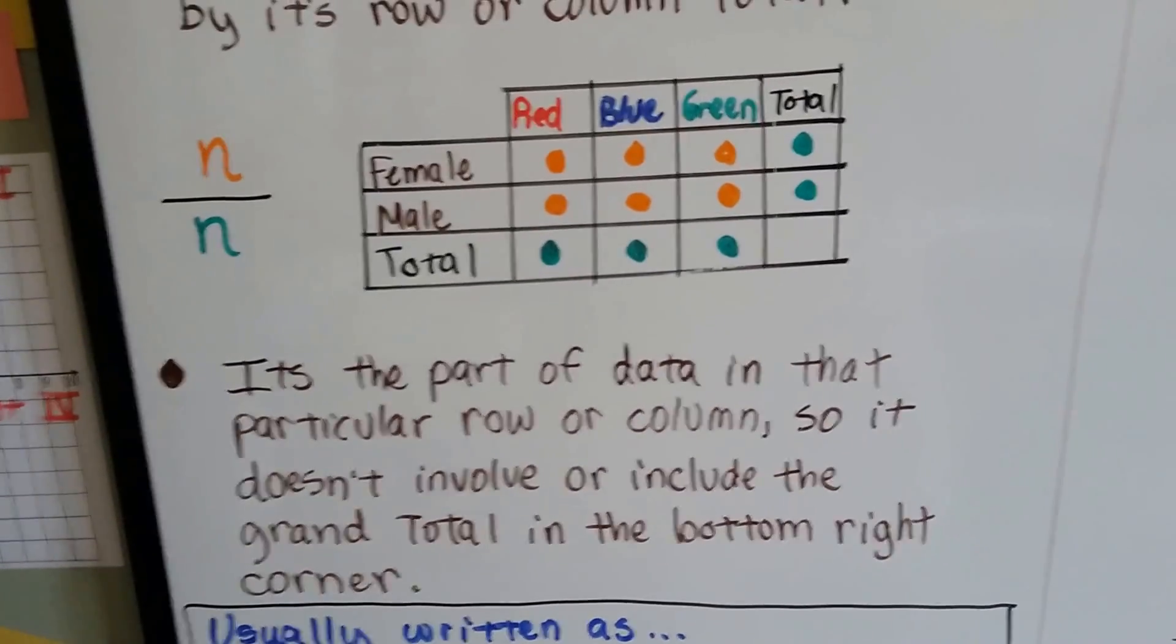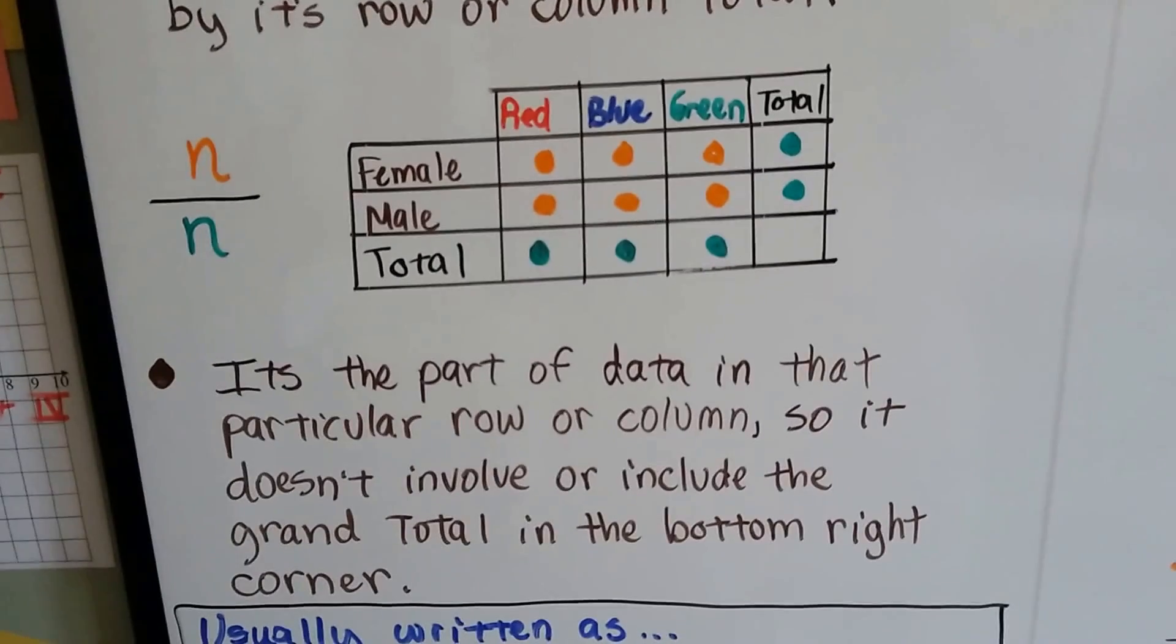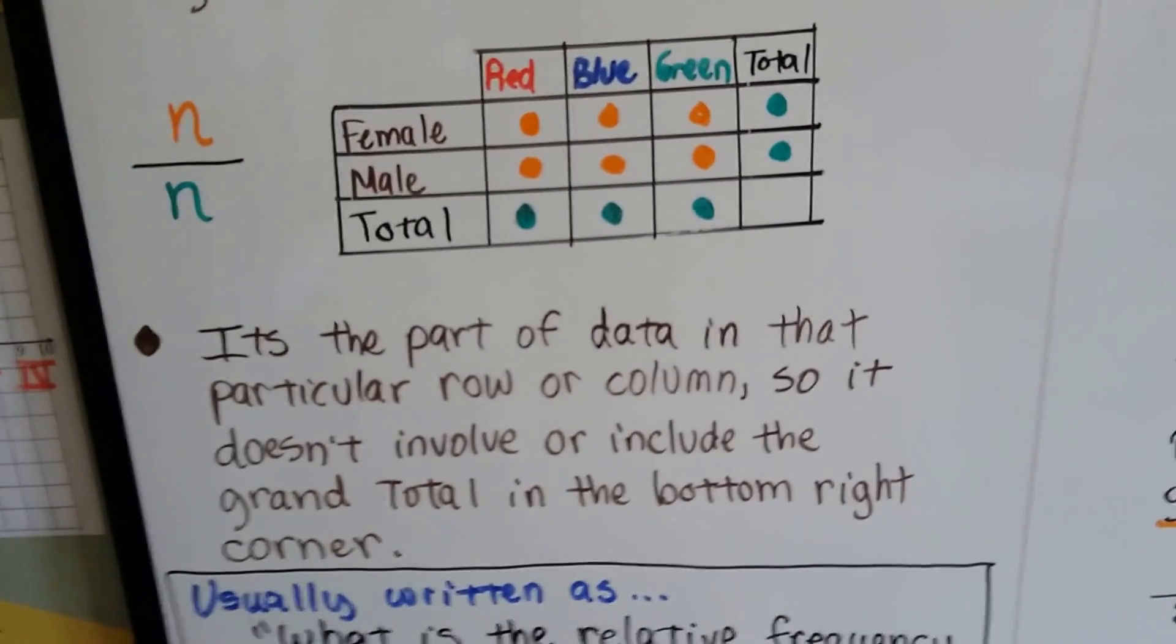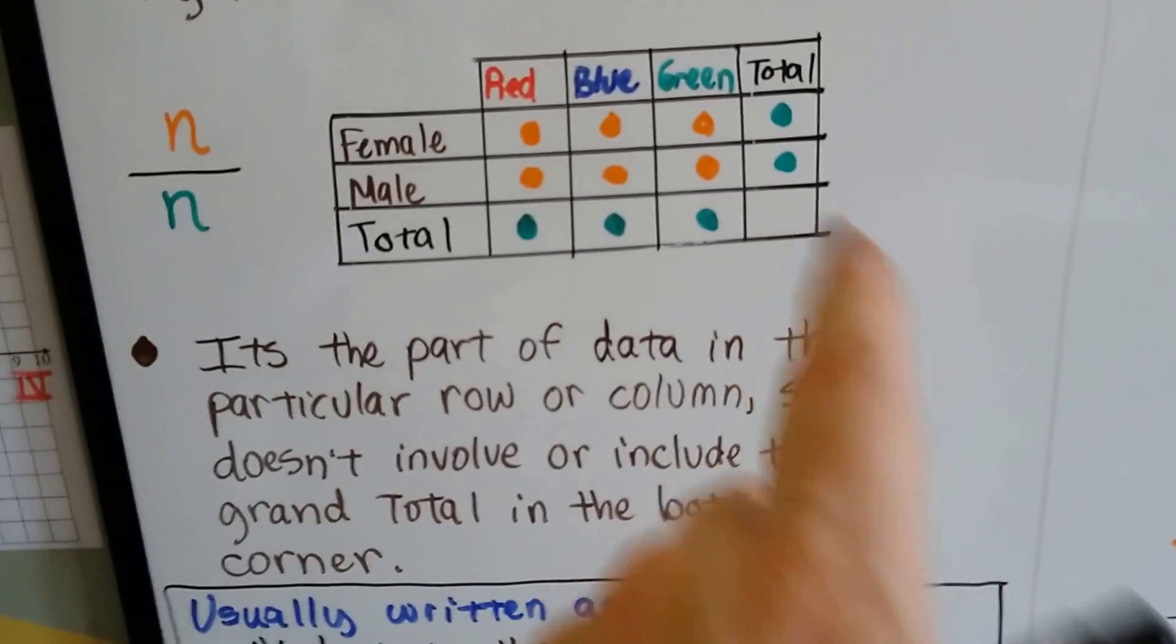And it's part of the data for that particular row or column. So it doesn't involve or include the grand total in the bottom right corner. That's got nothing to do with it.